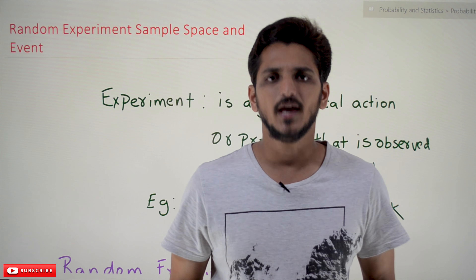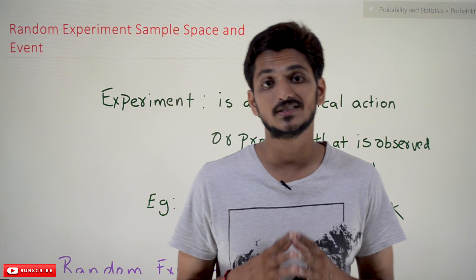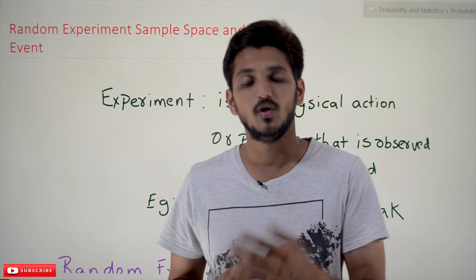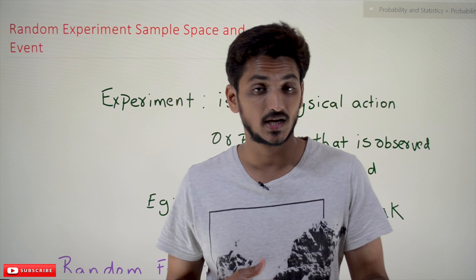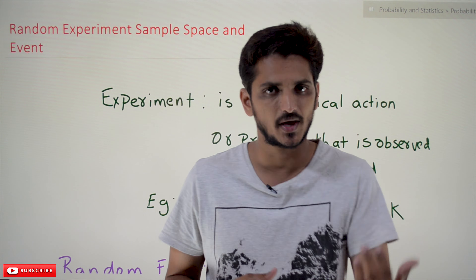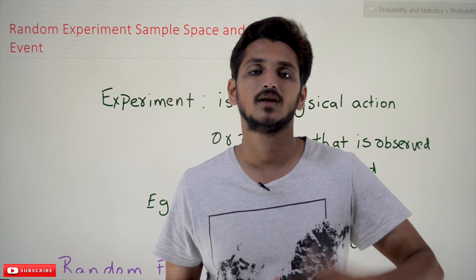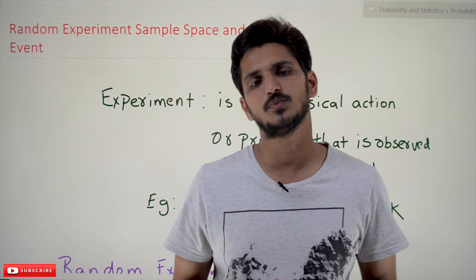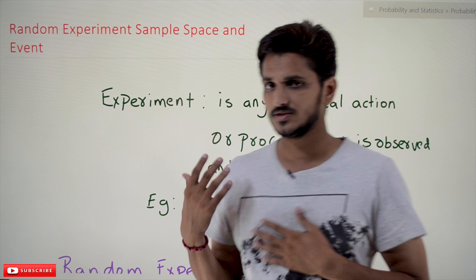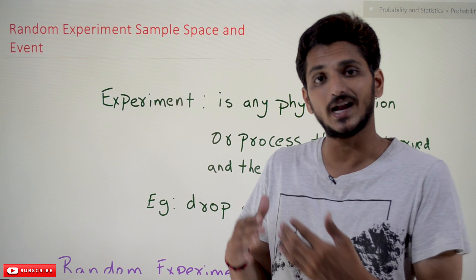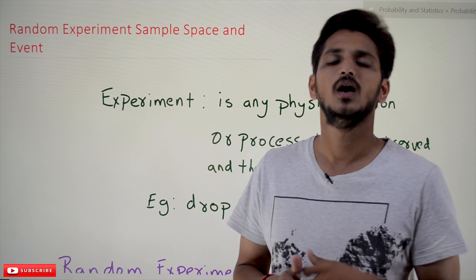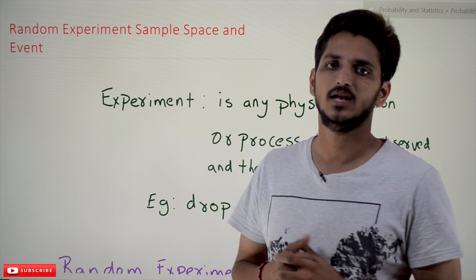Hi, welcome to Learning Monkey. I am Raghu. In this class we will discuss about random experiment, sample space, and event. We will understand the definitions. In our last class we clearly discussed about what probability means and what is biased and unbiased. Please watch that class and come back here. The link for the playlist is provided in the description below. The definitions we are going to discuss here will help you a lot in understanding our next classes.